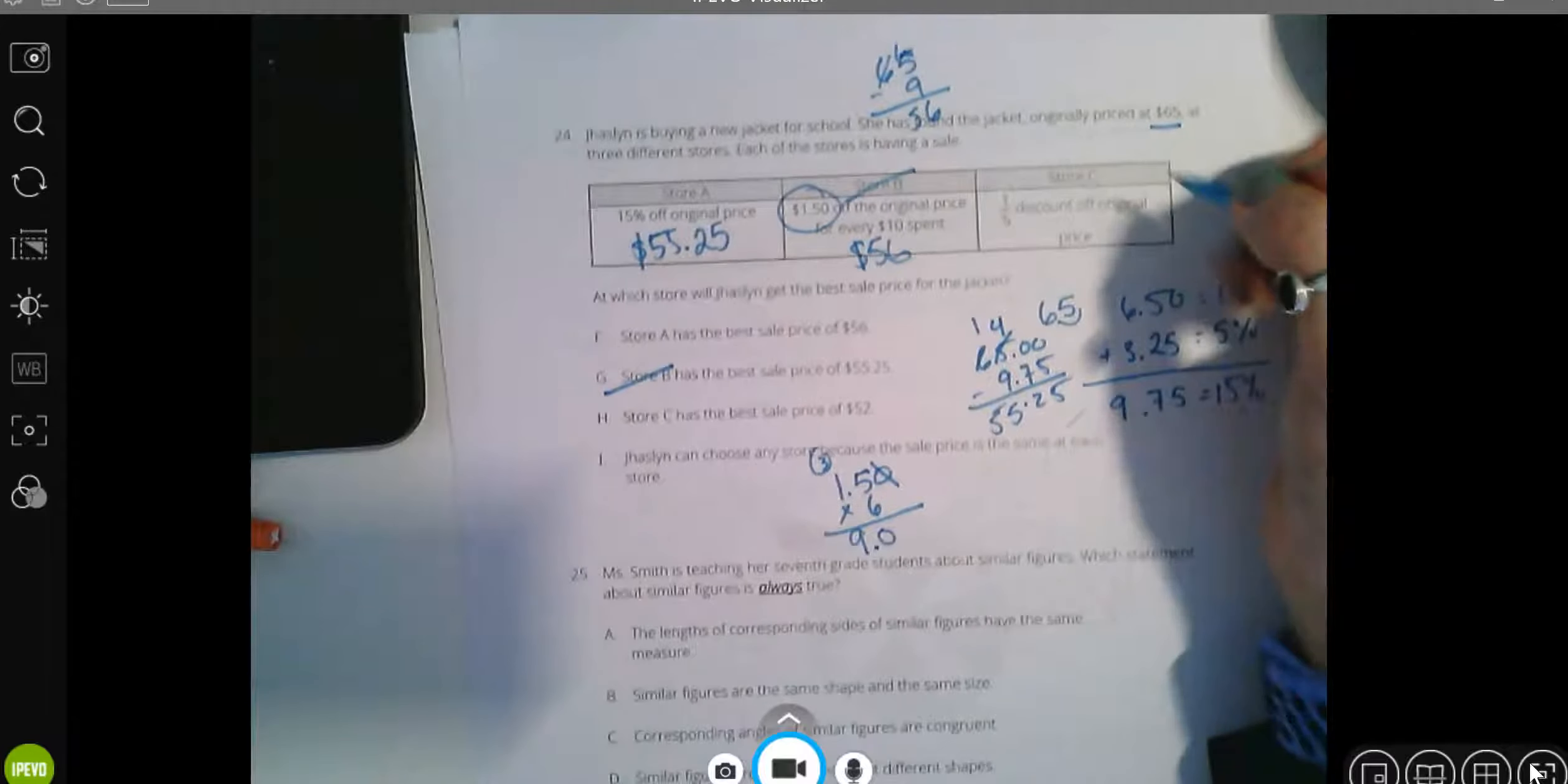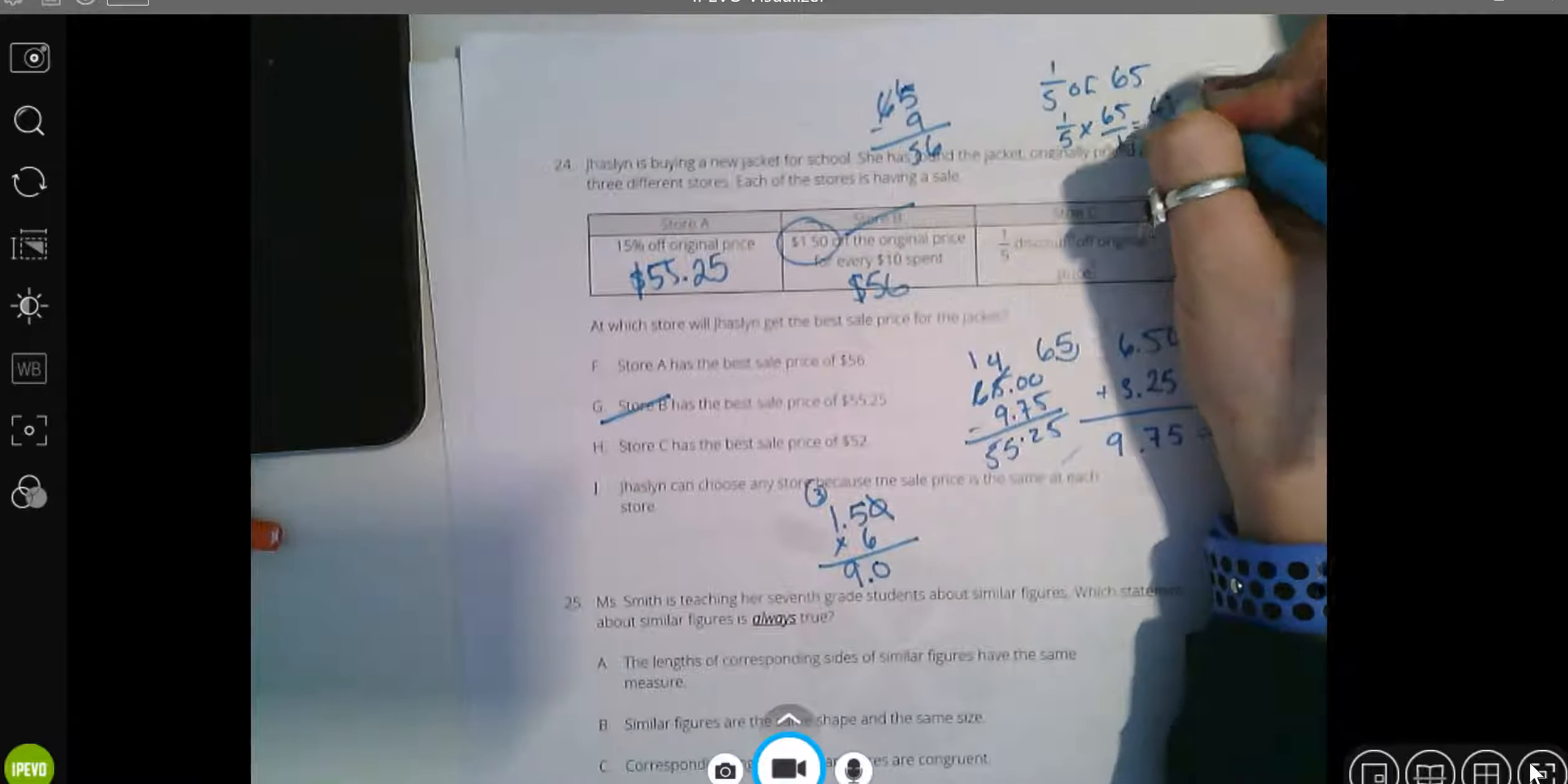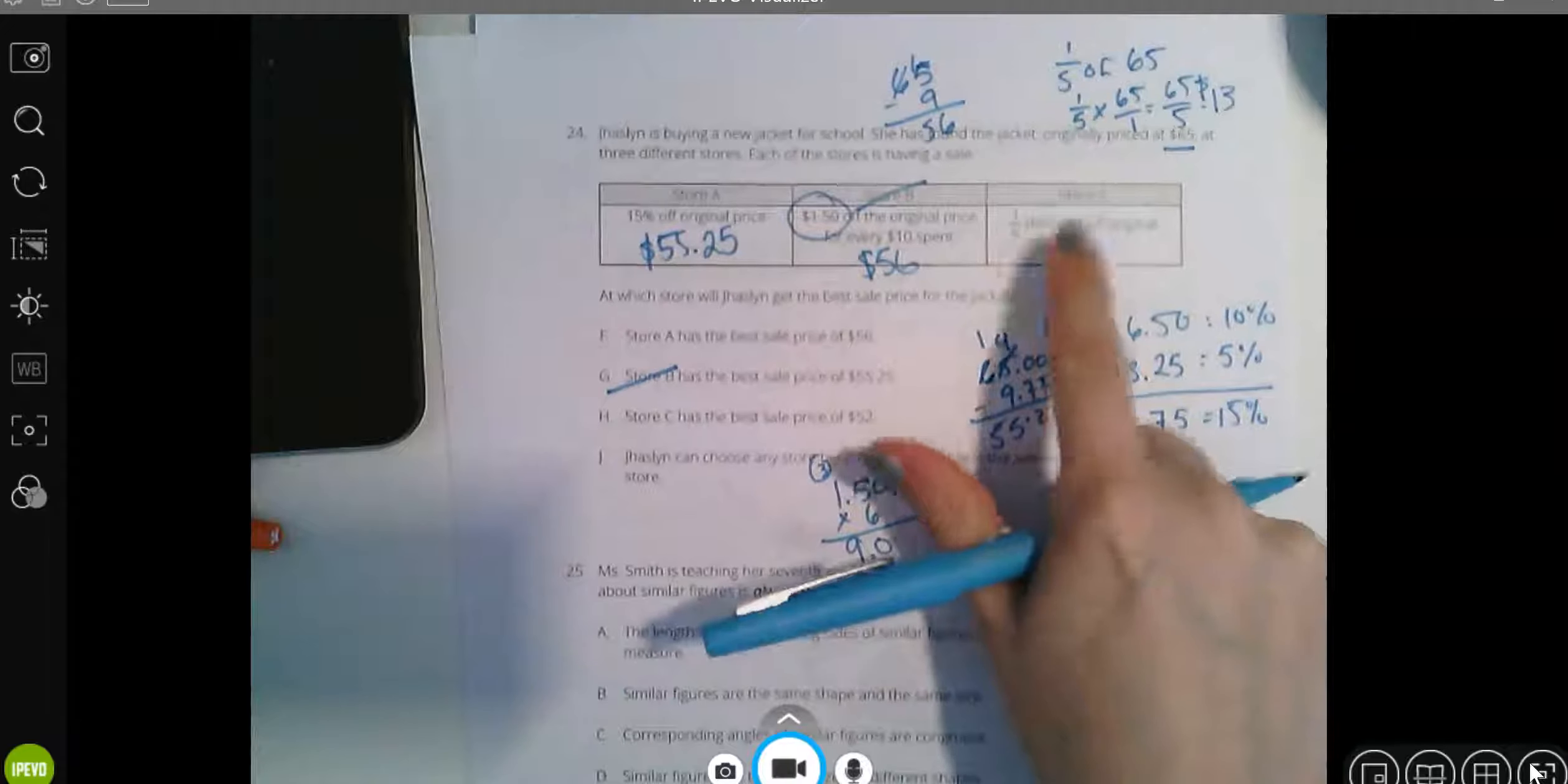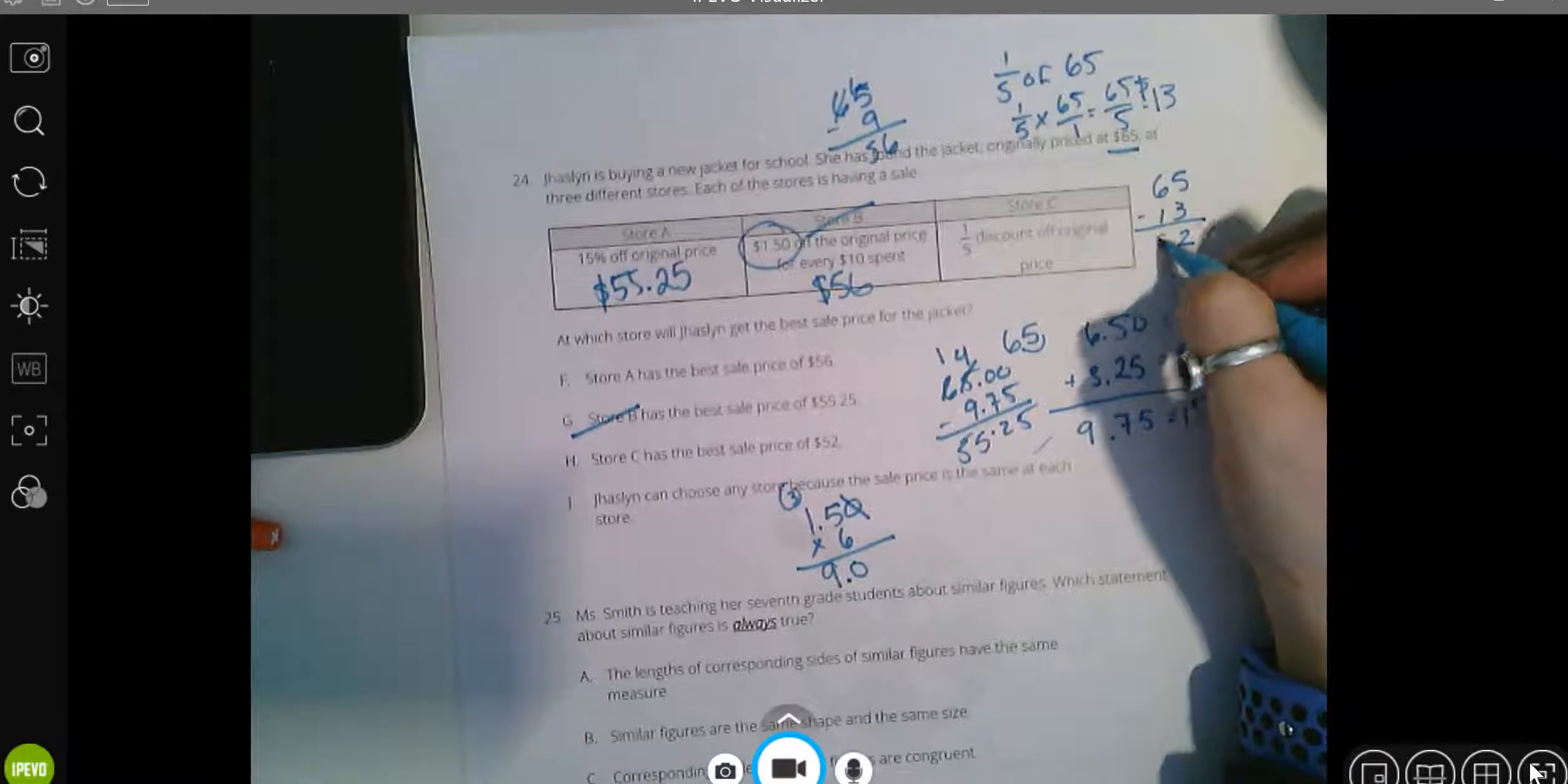Store C, one-fifth off the original price. One-fifth of 65 is going to be one-fifth of, means multiply, 65 over 1, which is 65 divided by 5, which is going to be 13. So we're taking $13 off here. I took $9 off here. This is going to be my best price without even doing my math. But I'm going to do it just to prove it. $65 minus $13 is going to be $52.